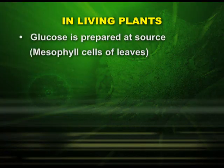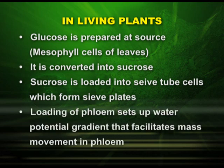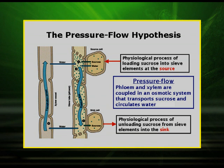In the same way in living plants, we can explain transport through phloem: glucose prepared at the source, that is the mesophyll cells of leaves, is converted into sucrose. The sucrose is loaded into sieve tube cells which form sieve plates, and the loading of phloem sets up a water potential gradient that facilitates mass movement in phloem. To conclude, the pressure flow hypothesis explains loading of sucrose into sieve elements at the source, the coupled phloem-xylem osmotic system that transports sucrose and circulates water, and the unloading of sucrose from sieve elements into the sink.